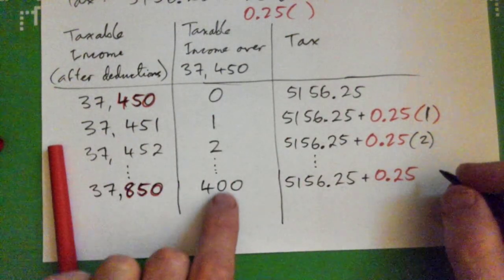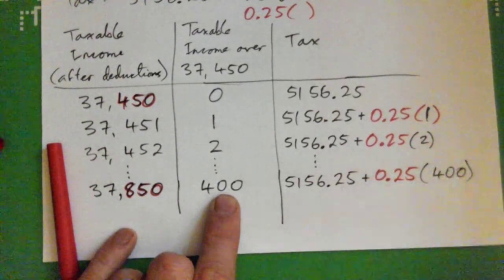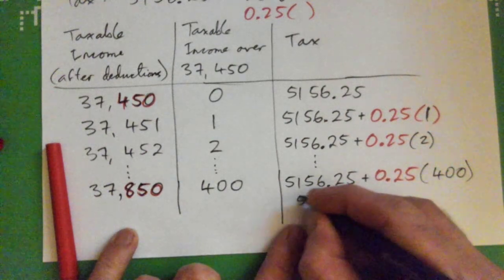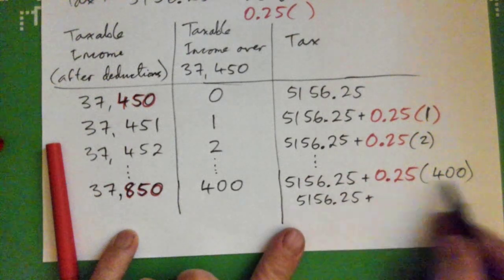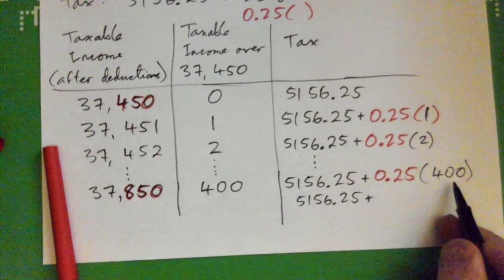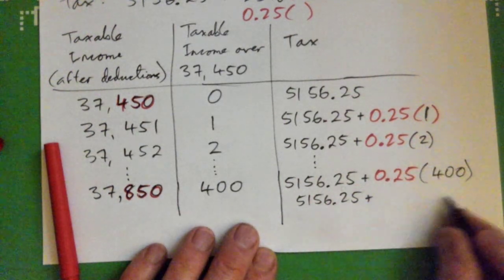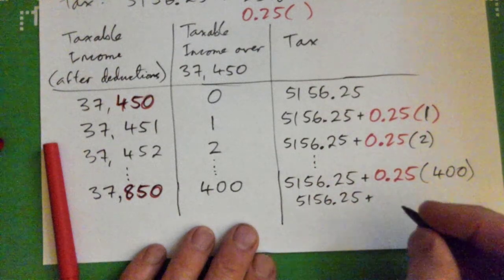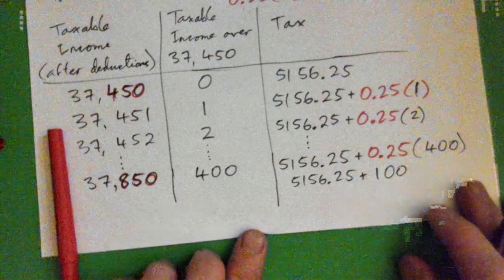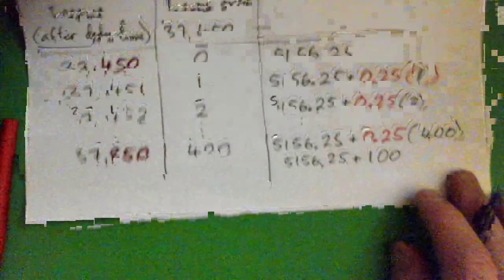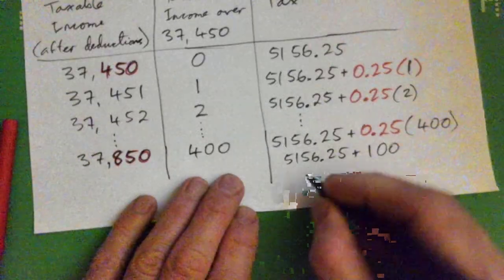So we definitely pay the $5,156.25, but we also pay 25 cents on the dollar of this money, or in other words, 25% of 400. In this case it would be $5,156.25 plus, plug that in the calculator, what's a quarter of 400? This will work out to be just 100 dollars, right?